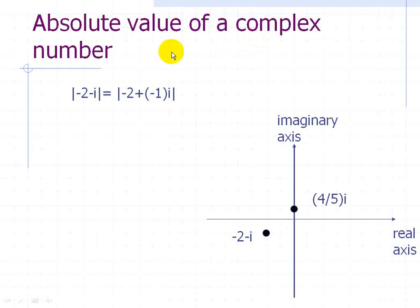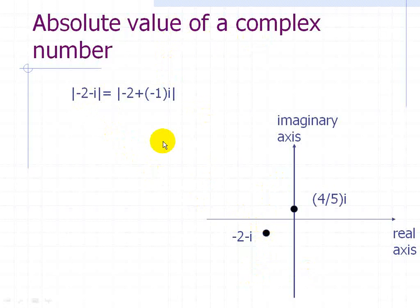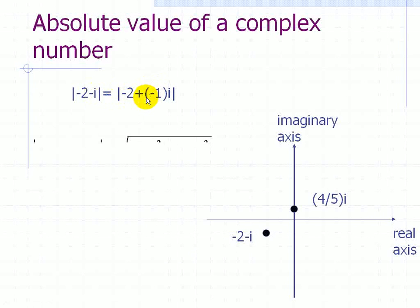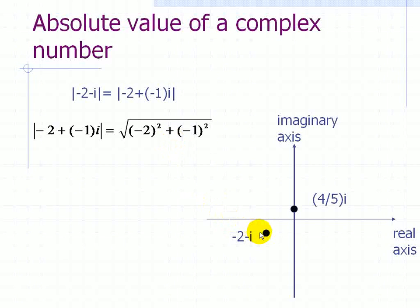Let's look at the absolute value of a complex number in the complex plane. Given the absolute value of -2 - i, we plot the point (-2, -i) in this complex plane and want to find the absolute value. To find the absolute value is really to find the distance from this point to the origin. What that involves is taking the square of the real component plus the square of the imaginary component, summing those two numbers, and then taking the square root.